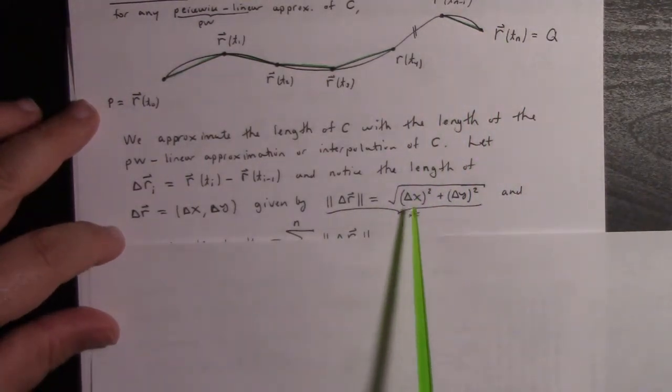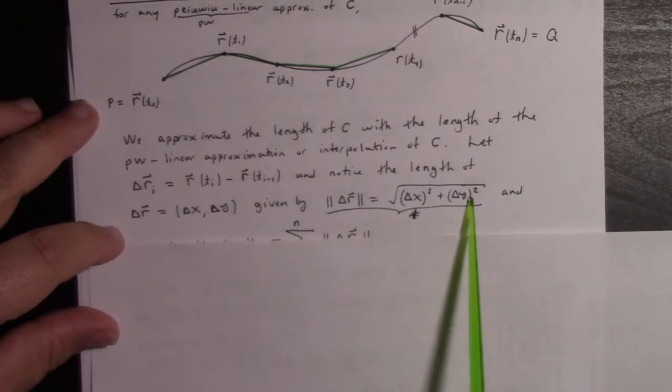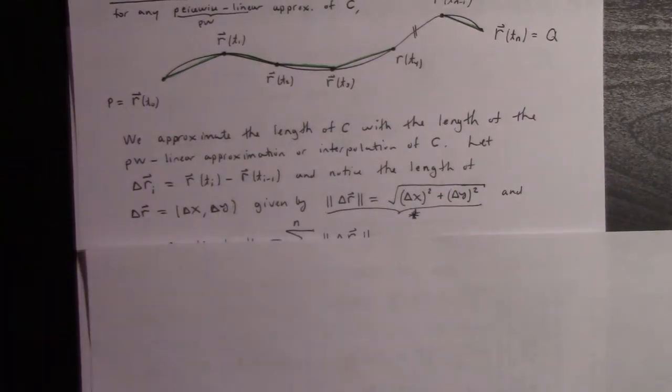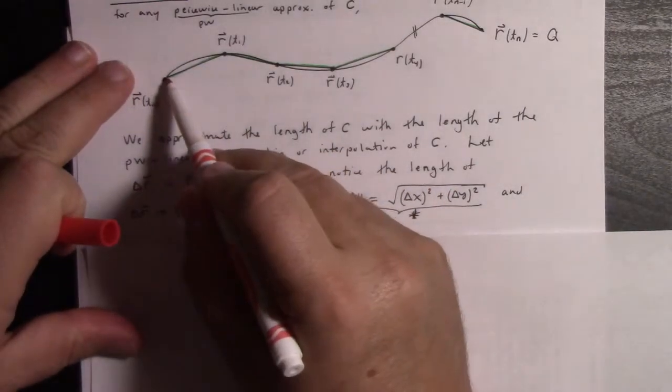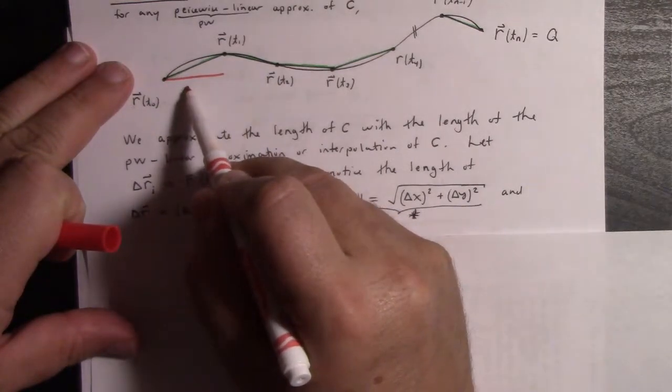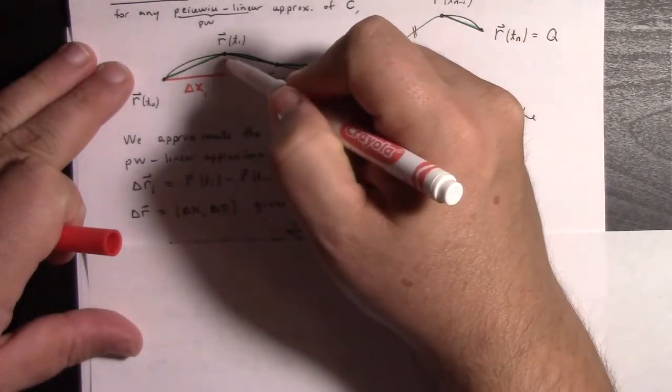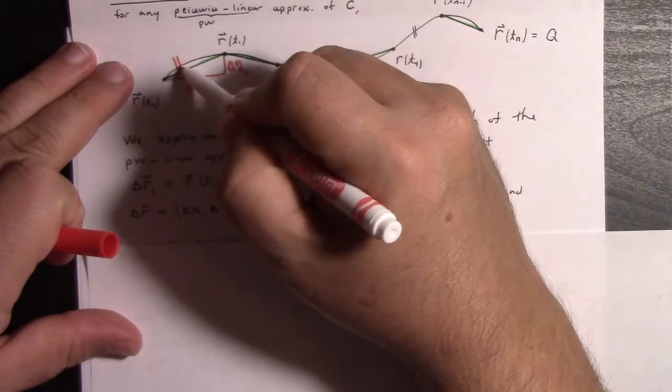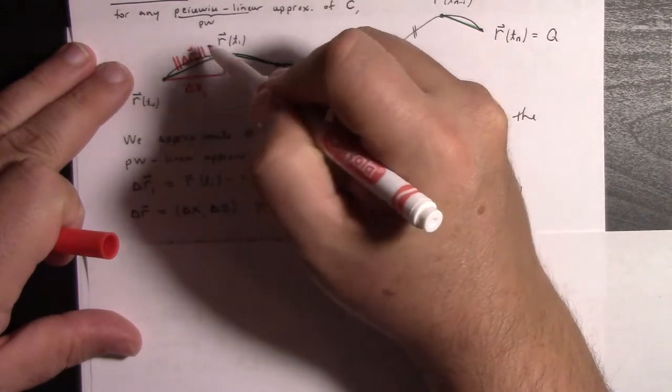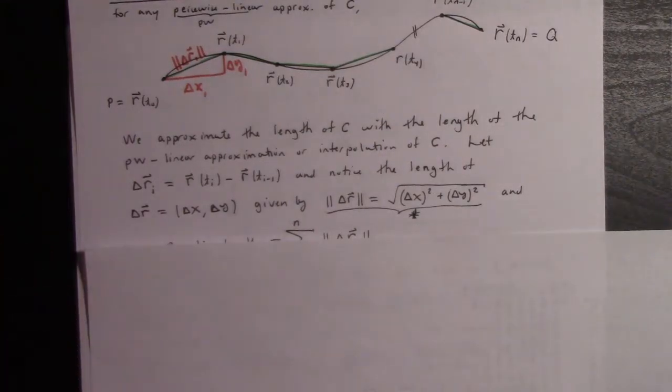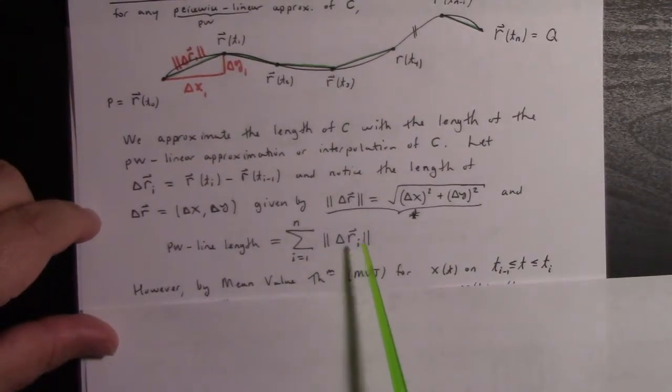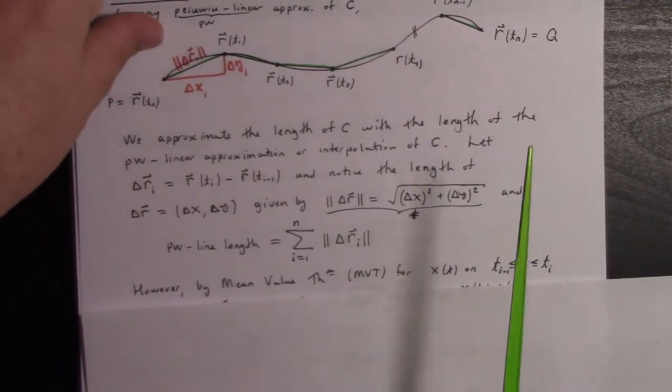That's what we would want to mean by arc length. So we can approximate the length of C by the length of a piecewise linear approximation or interpolation. The little displacement from one point to the other, going from here to here would be ΔR₁, then ΔR₂, ΔR₃, ΔR₄, and the last one would be ΔRₙ.